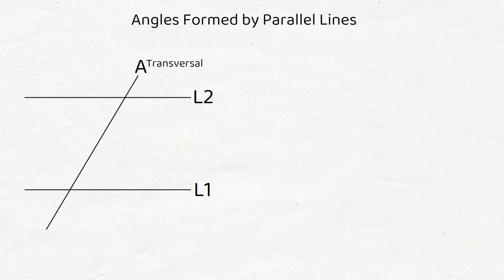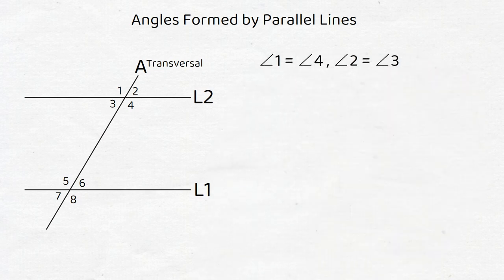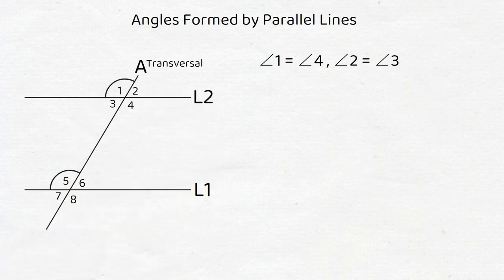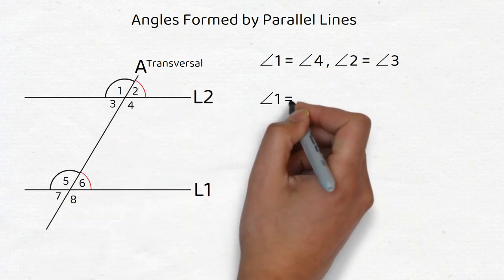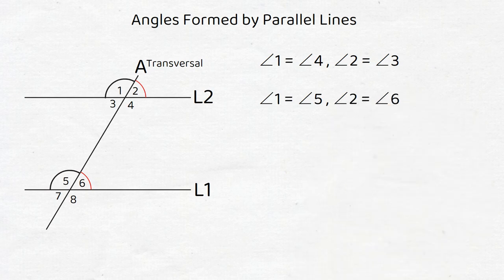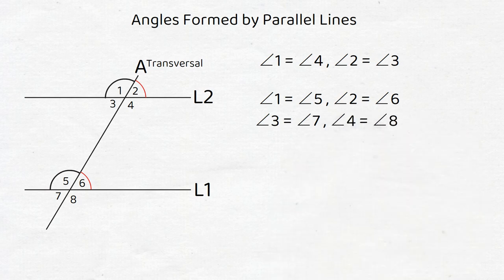The transversal creates eight angles. We already know that ∠1 = ∠4 and ∠2 = ∠3, as those are opposite angles. It's also true that the corresponding angles on line 1 and line 2 are equal as well. Thus, ∠1 = ∠5, ∠2 = ∠6, ∠3 = ∠7, and ∠4 = ∠8.